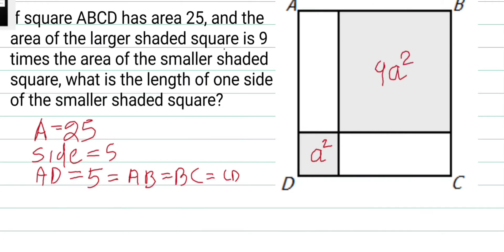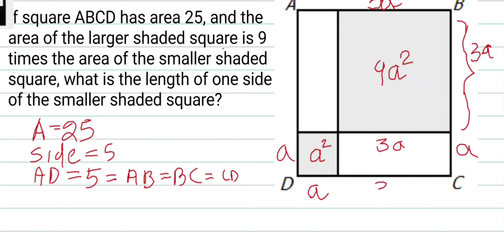Okay, that means the side of the small square is a, whereas the side of this big square from here to here is going to be 3a. This is a, this is 3a, this is 3a. That means the whole